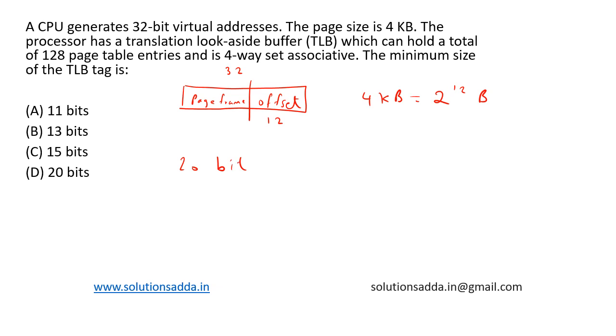The other information given here is that the TLB is 4-way set associative and it can hold 128 page table entries.